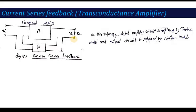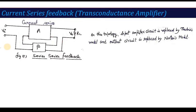Current series feedback is also known as the transconductance amplifier. We covered the voltage amplifier in the previous lecture; now we are talking about the transconductance amplifier, which is current series feedback. Since current comes from the output side, the output circuit is replaced by a Norton model, while the input side has a series connection replaced by a Thevenin equivalent.